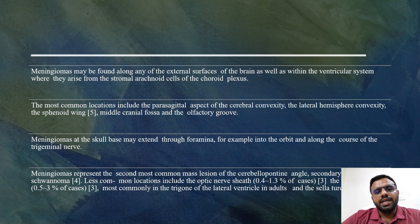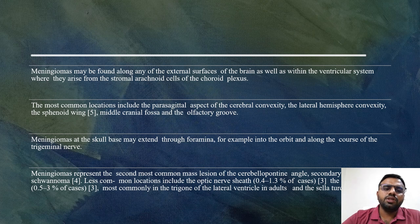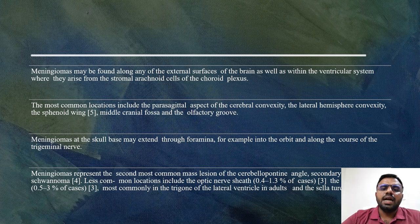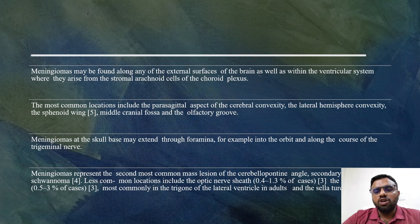Meningiomas may be found along any of the external surfaces of the brain as well as within the ventricular system, where they arise from the stromal arachnoid cells of the choroid plexus. The most common locations include the parasagittal aspect of the cerebral convexity, the lateral hemisphere convexity, the sphenoid wing, middle cranial fossa, and the olfactory groove. Meningiomas at the skull base may extend through foramina into the orbit and along the course of the trigeminal nerve.